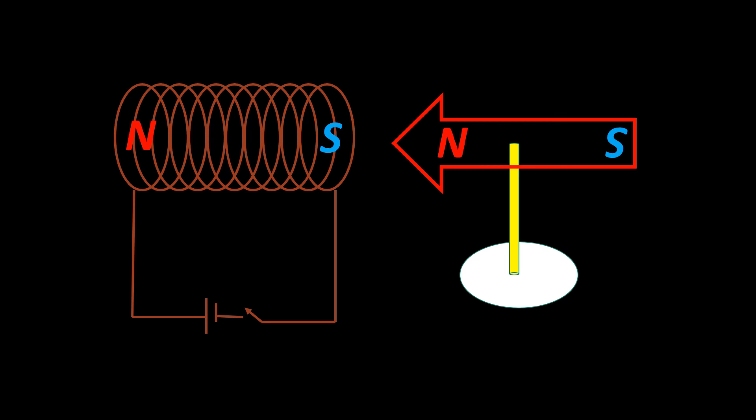This is how we can determine the poles of a current carrying solenoid using a bar magnet, that is a magnetic compass needle.